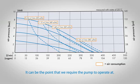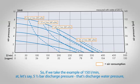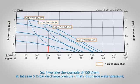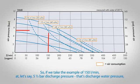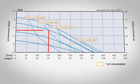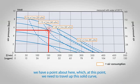So if we take the example of 150 liters per minute at, let's say, 5½ bar discharge pressure, that's discharge water pressure, we have a point about here.